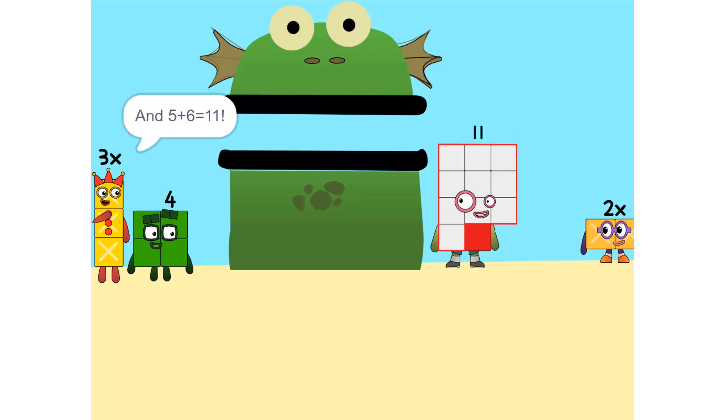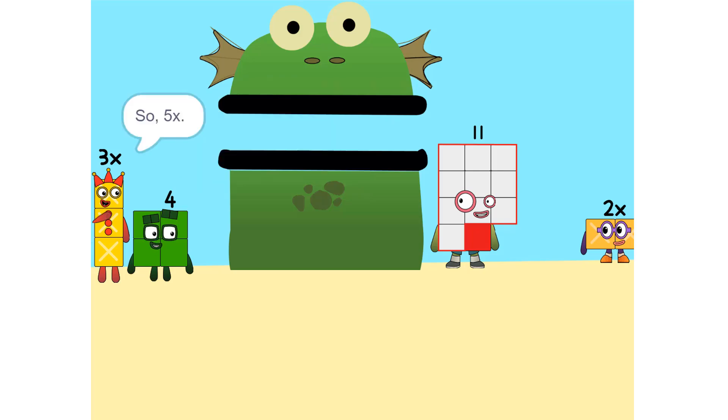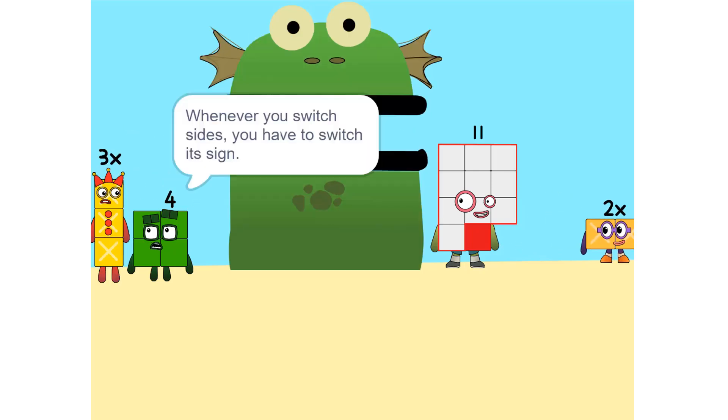And 5X plus 2X equals 11. Yeah. Now, we have to move things around. We have to move this 2X to this side. So, 5X. Whenever you switch sides, you have to switch its sign. So if it's positive, it becomes negative and vice versa.